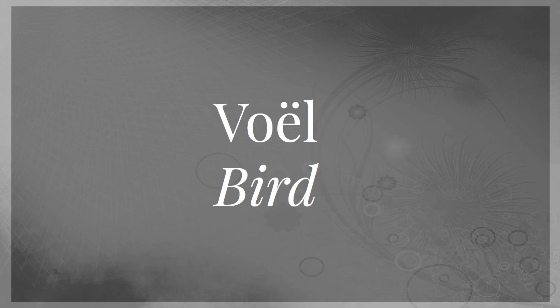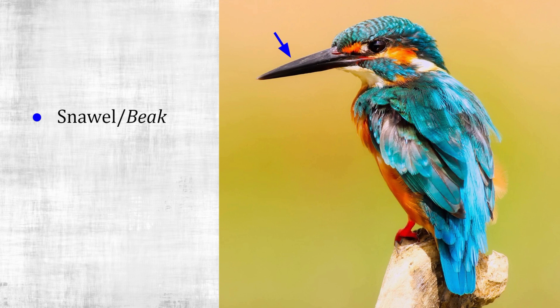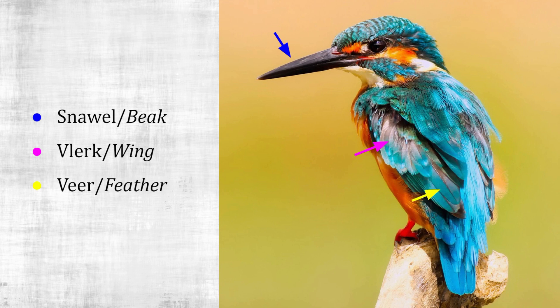Voël — bird. If you've watched the lesson about animals, can you still remember what the meaning of the word voël is without the umlaut? Snorvel — beak. Vlerk — wing. Veer — feather.